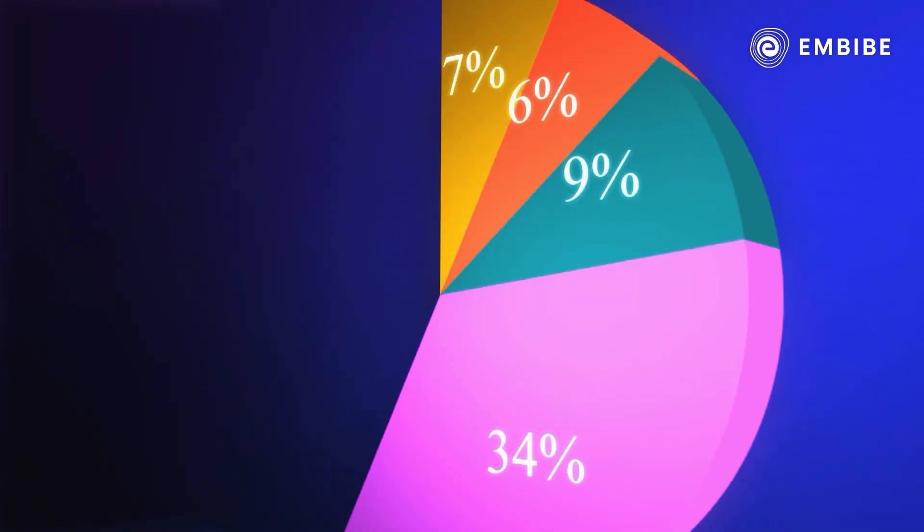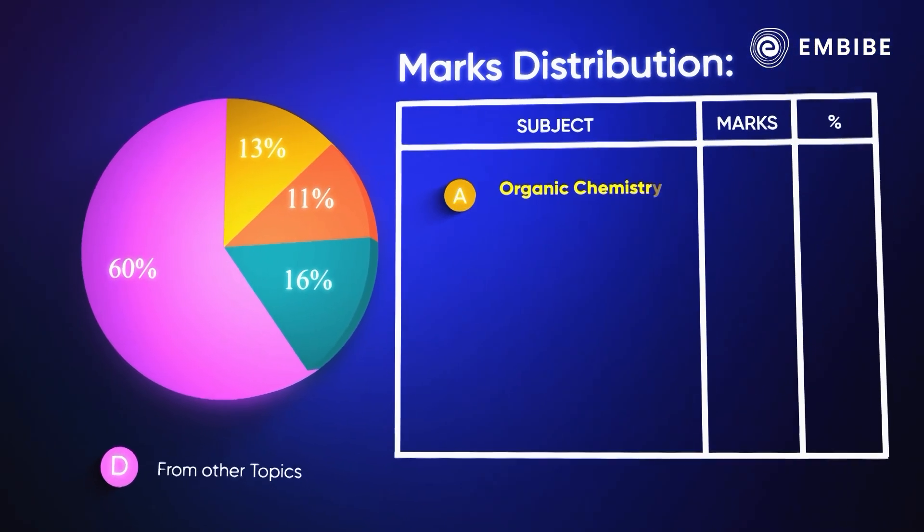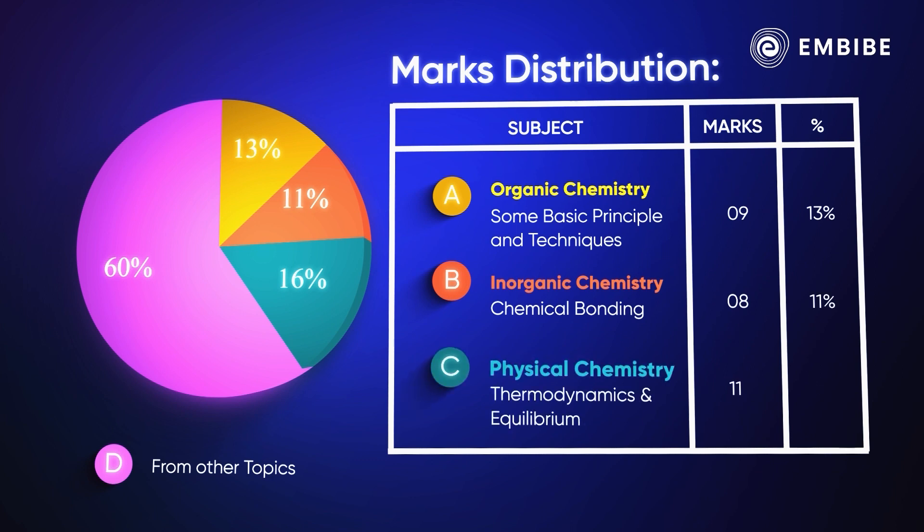Even if you read one or two chapters from each unit, you can easily score 28 marks.